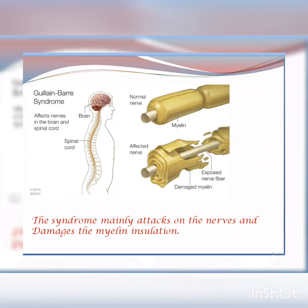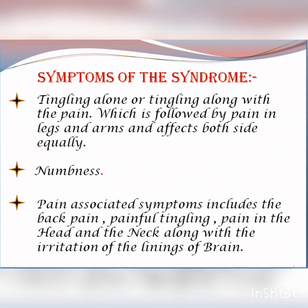In Guillain-Barré syndrome, the nerve myelin sheath is mainly damaged. The myelin sheath is the outer sheath which usually covers an axon. The syndrome mainly attacks the nerves and damages the myelin insulation.